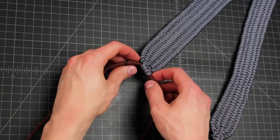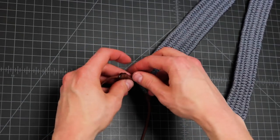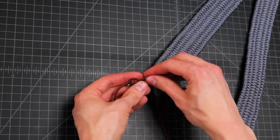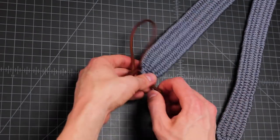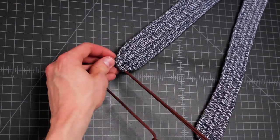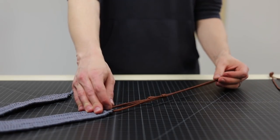Alright, so then to adjust your strap, all you've got to do is pull the cord through each knot. Get them both to the same length. And there we go. Let's try it out.